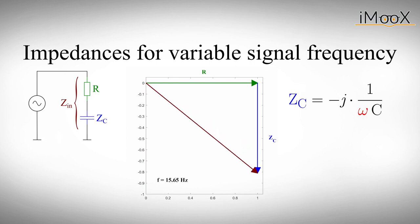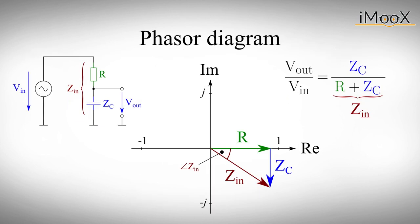Its impedance is minus 90 degrees phase shifted and increases at low frequencies, while it decreases at high frequencies. Remember that the impedance of the capacitor determines the voltage at the output of our filter.